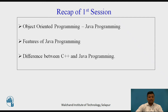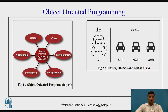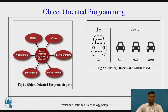The recap of the first session: in the first session we covered object-oriented programming — what is meant by object-oriented programming and what are the different types such as abstraction, inheritance, encapsulation, and polymorphism.